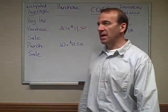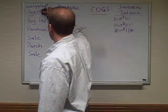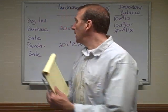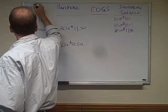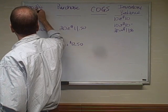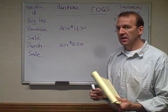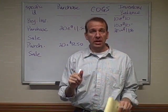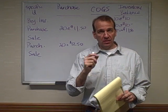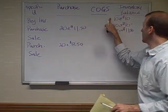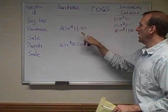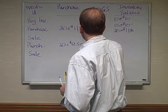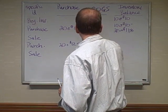Now we've got our very last method — it's called Specific Identification. The specific identification method tells you specifically which ones you sold. On any homework problems it would have to tell you which ones were sold. We have beginning inventory of 10 units at $10 — these are basketballs — and then we purchased 20 of them at $11.